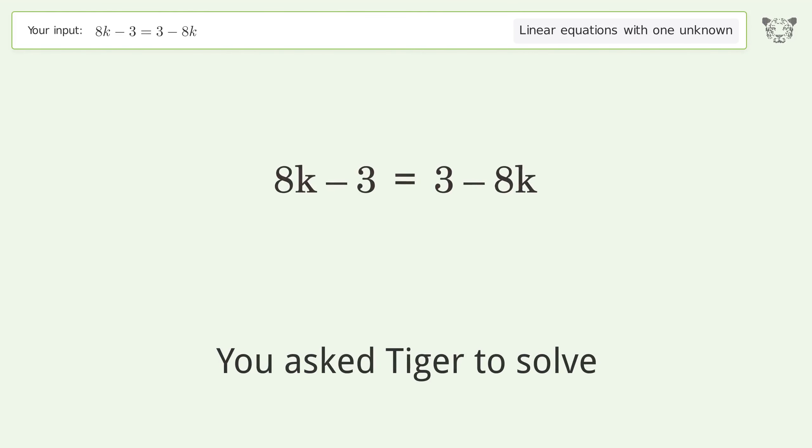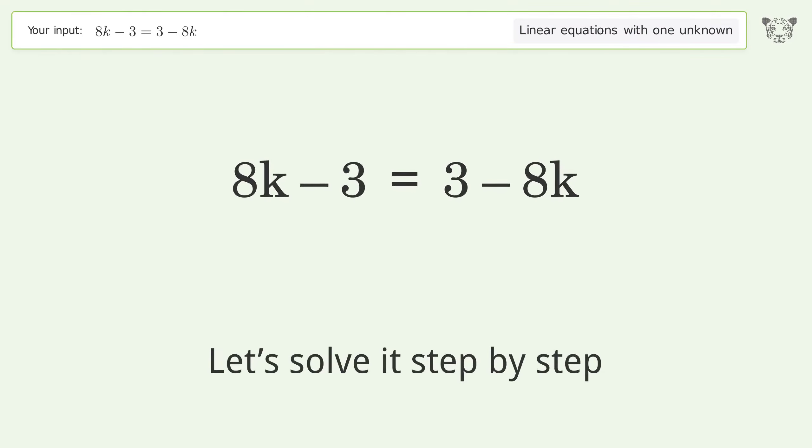You asked Tiger to solve. This deals with linear equations with one unknown. The final result is k equals 3 over 8. Let's solve it step by step.